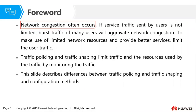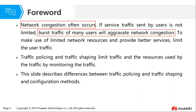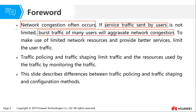Network congestion often occurs in our network. If the service traffic sent by users is not limited, then burst traffic from many users will lead to congestion. For example, in campus networks, sometimes students are torrenting and downloading from different servers, and they might end up utilizing a lot of bandwidth. If we have several such users, we are most likely going to have congestion in our network.